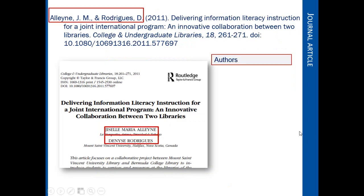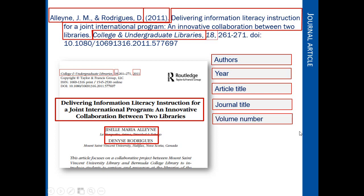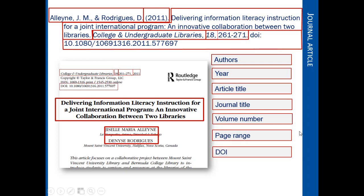For a journal article, again, we start with the author's last names and initials, followed by the year of publication. The title of the article is written in sentence case — that means the first letter is capitalized, and then the letter after the colon is capitalized as well. Then we add the journal title, followed by the volume; these are both in italics. We then place the page range of the article. Finally, we have the DOI, which is required by APA.